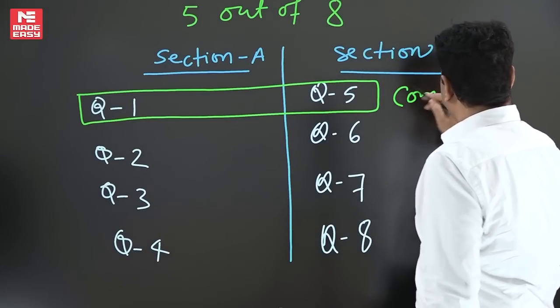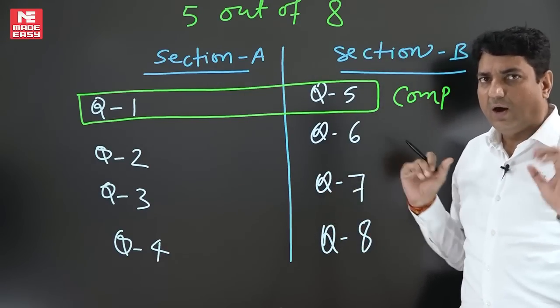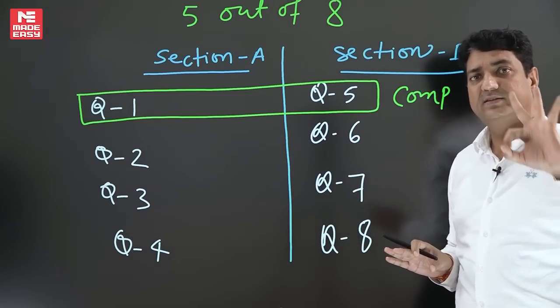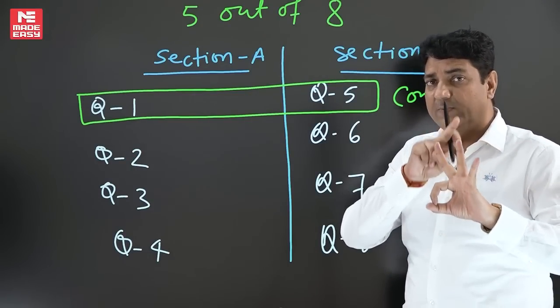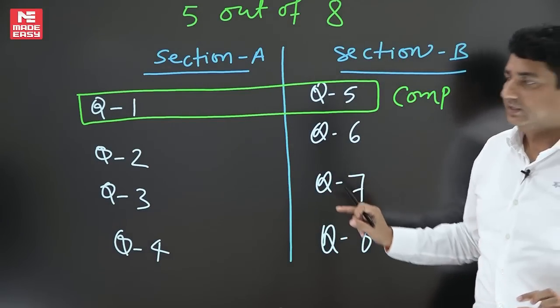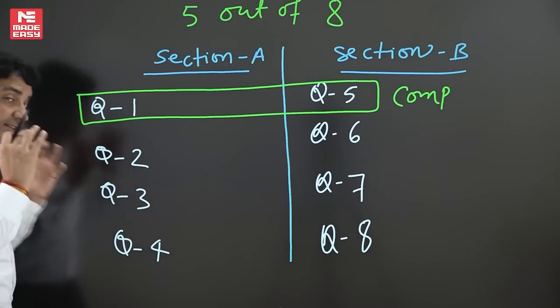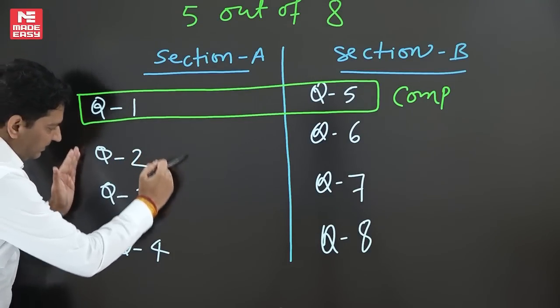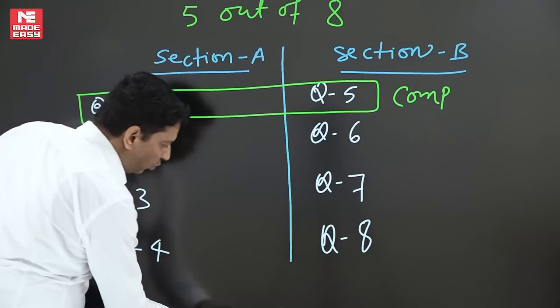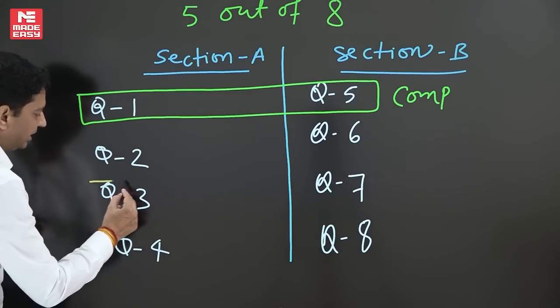Now remaining three questions to be selected out of the six. You need to select three, but question paper instruction says there would be at least one question from each section. So this is the main task here - you have to choose three. Question number two, three, and four, you may choose at least one question.